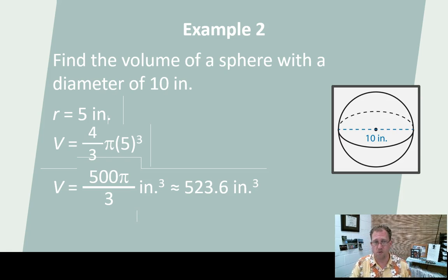So four thirds times pi times five cubed. Five cubed is 125. Four thirds of 125, we could just say four times 125, which is 500 over three. 500 times pi over three cubic inches, or if you want to reduce that down to an equivalent decimal. And actually, 500 thirds, you could probably have made that a smaller number too. I don't know why they stopped there. But 500 thirds pi becomes 523.6 cubic inches. And that would be the volume of a ball with that diameter.